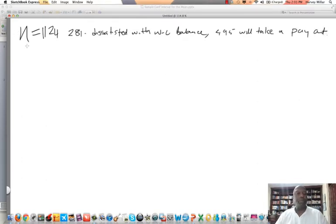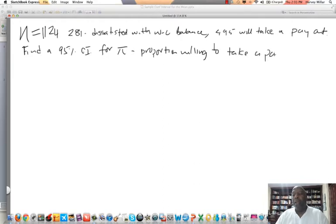So we want to know, find a 95% CI confidence interval for π, the proportion willing to take a pay cut.